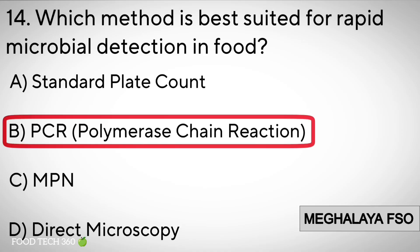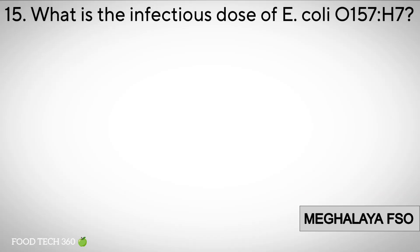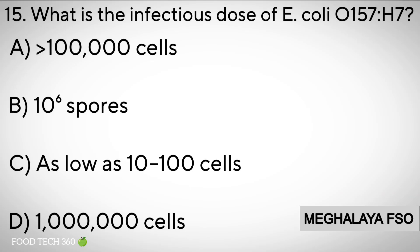Question number 15: What is the infectious dose of E. coli? Options: A. Greater than 1 lakh cells. B. 10 to the power 6 spores. C. As low as 10 to 100 cells. D. 1 million cells.